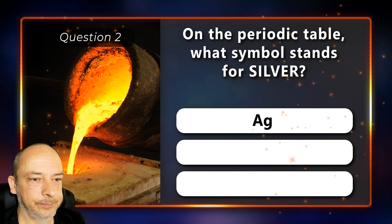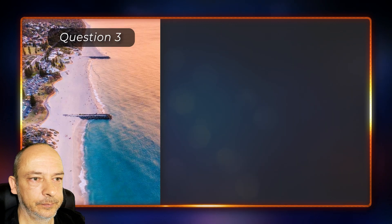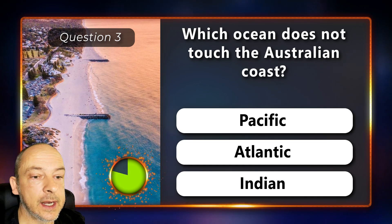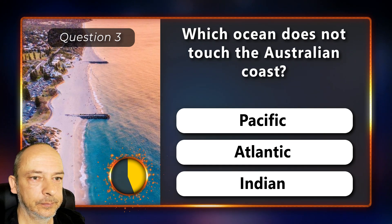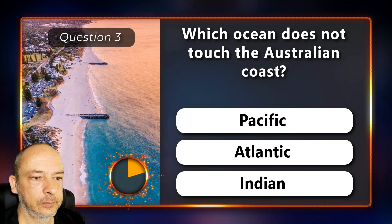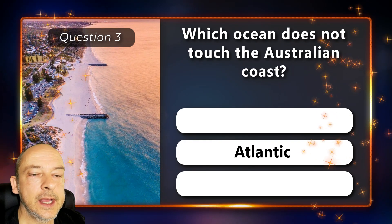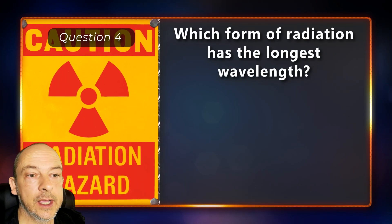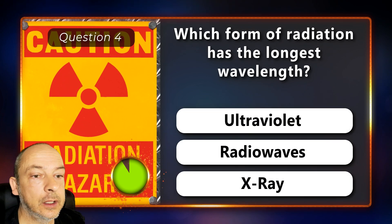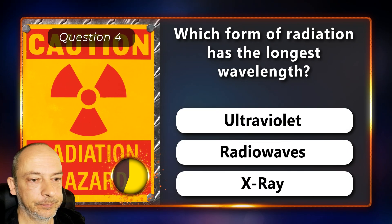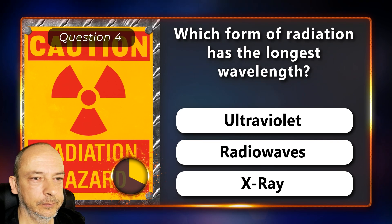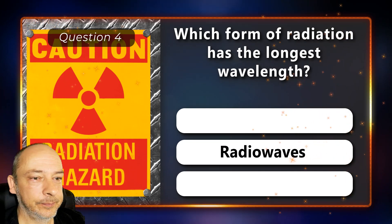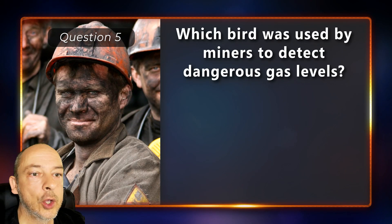Silver is AG. Which ocean does not touch the Australian coast — is it the Pacific, Atlantic, or Indian Ocean? It's the Atlantic Ocean. Which form of radiation has the longest wavelength — ultraviolet, radio waves, or X-ray? Radio waves.